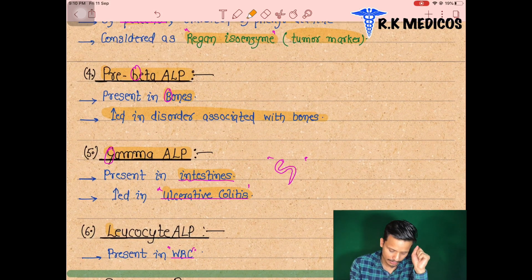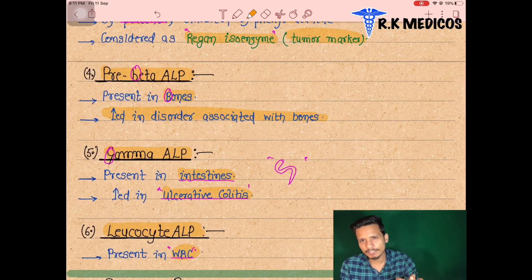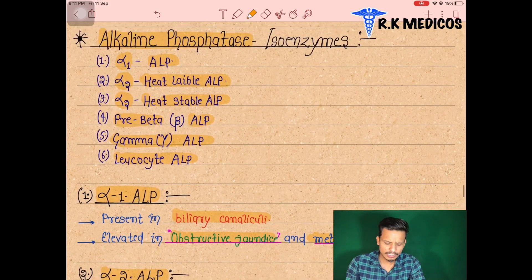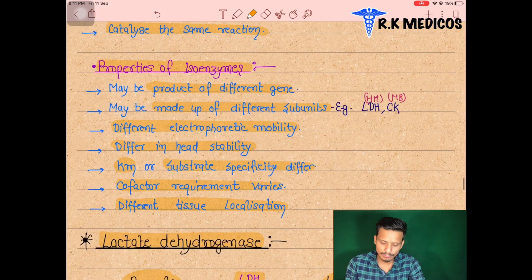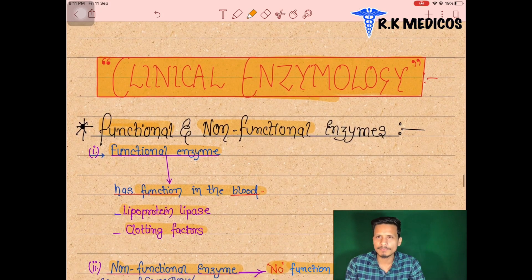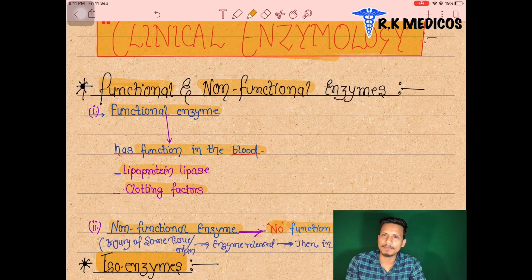Leukocyte ALP represents WBCs. These are the different alkaline phosphatase isoenzymes — when they rise in the blood they indicate which region of the body is damaged. In the next topic, we will discuss specific organ markers such as cardiac markers and liver acute damage markers.